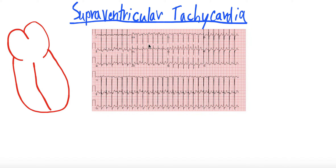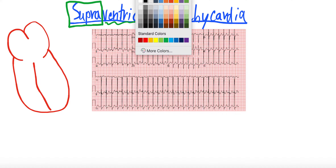So supraventricular tachycardias — what are they? Supraventricular tachycardias encompass a broad category of tachydysrhythmias. They arise from above the bundle of His. In medicine, it's sometimes nice when the definition of something actually aligns with the name of it. Supraventricular — supra means above and obviously ventricular is the ventricles — so supraventricular, suffice to say, is arising above the ventricles.